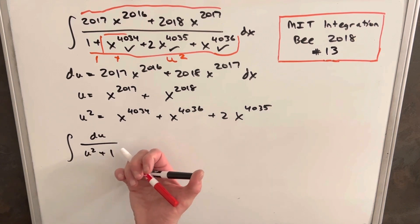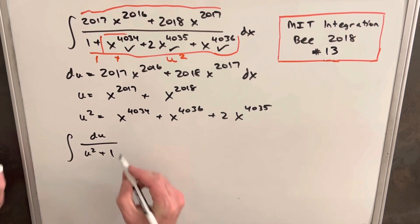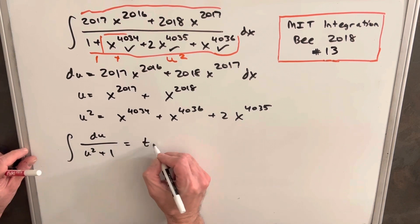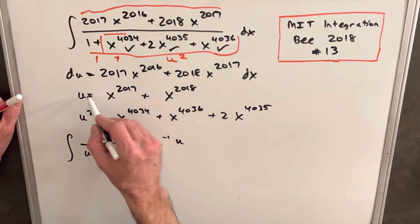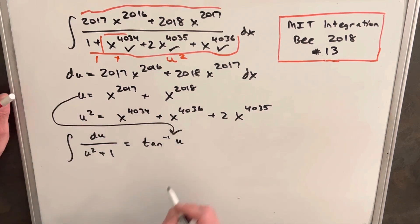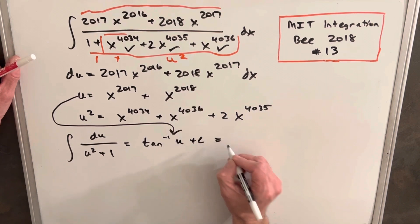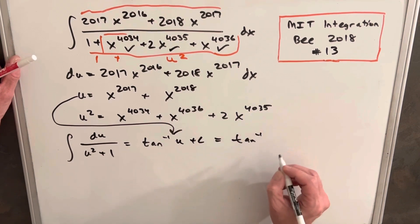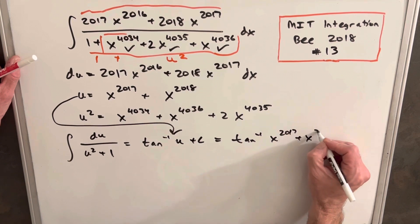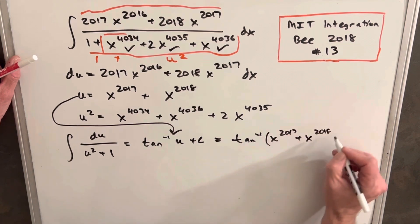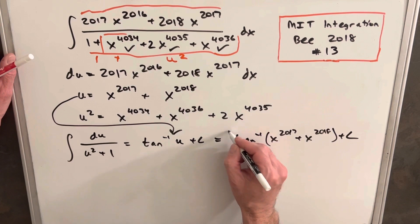Okay so just rewriting this in terms of u, we have du over u squared plus one. But we know what that is, that's going to be a common integral, that's arctan or inverse tangent of u. So then we just need to back substitute here and we're gonna have arctan x 2017 plus x 2018 plus c and we're done.